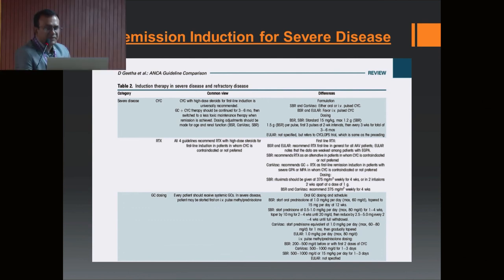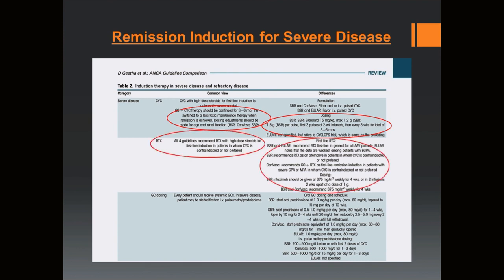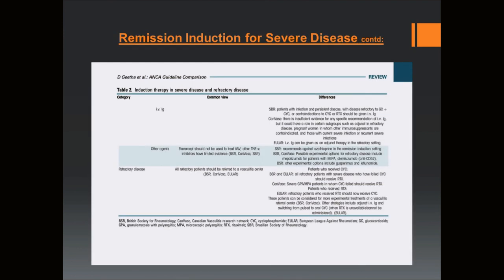Treatment is divided into two phases: remission induction and remission maintenance. Remission induction is achieved with oral or IV glucocorticoids combined with IV or oral cyclophosphamide, or along with rituximab. In some cases, if the patient presents with infection or persistent disease, IV immunoglobulin could be used. In refractory cases, there may be changes in treatment patterns or options.